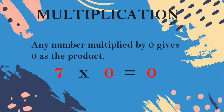7 0s are 0. Any number multiplied by 0 gives 0 as the product. The answer is 0. All of them understood, children? Any number multiplied by 0, the answer is also 0.